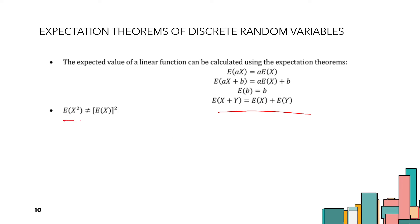Take note that E[X] squared is not equal to E[X²]. The expected value of X squared is not the same as squaring the expected value of X. So E[X²] and (E[X])² are two different things.